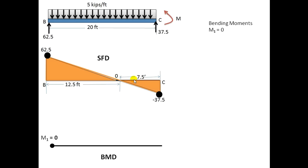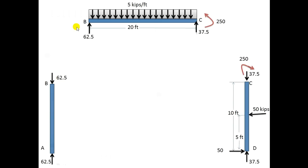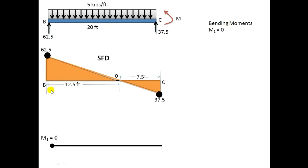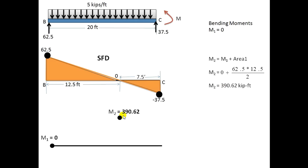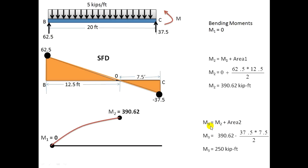Now for the BMD: M1 at point A equals zero because no moment is transferred at the roller (point B). M2 equals M1 plus the SFD area. The SFD area A1 is a triangle: 62.5 × 12.5 / 2 equals approximately 390.6 kN·m. This is the bending moment value at X equal to 12.5 m, which is the maximum moment location.